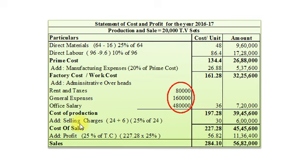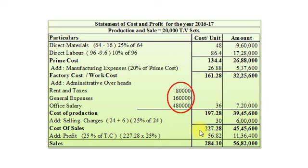Now we will add selling overheads or selling charges. In 2015-16 it was Rs. 24 per unit. As per adjustment number 4, selling expense per unit will increase by 25%. So 25% of 24 amounts to Rs. 6. Per unit our selling charges are Rs. 30. 30 multiplied by 20,000 TV sets — total amounts to Rs. 6,00,000. So our Total Cost or Cost of Sale amounts to Rs. 227.28 per unit and total Rs. 45,45,600.